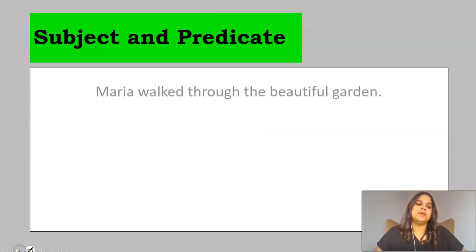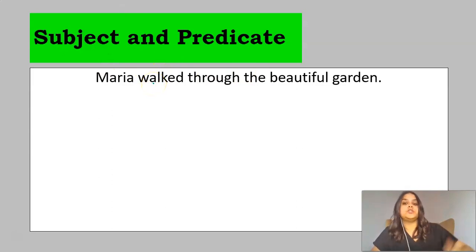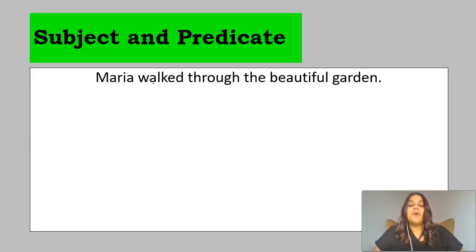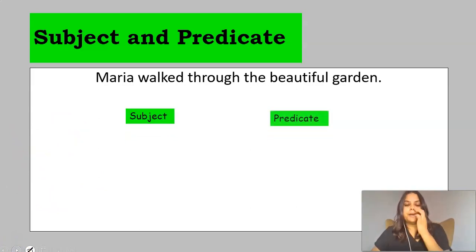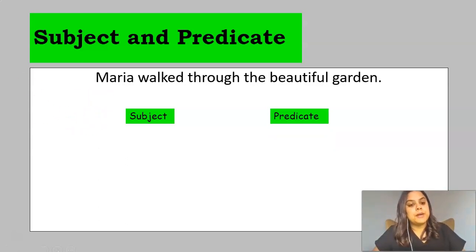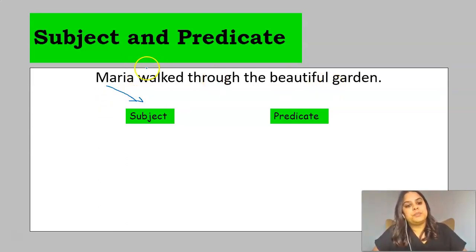Now we're moving on to subject and predicate, and we're going to put our sentence back on the screen. 'Maria walked through the beautiful garden.' What we have to remember with subject and predicate is that the subject of the sentence is who is doing the action — who is performing the action of the sentence. And the predicate is the verb and everything else in the sentence. It can get a bit confusing when you have an actual phrase as your subject, like 'all the children' or 'the many people,' but for now we can just identify our subject and predicate by breaking this up together. Maria is the subject of our sentence, and 'walked through the beautiful garden' would be regarded as our predicate.